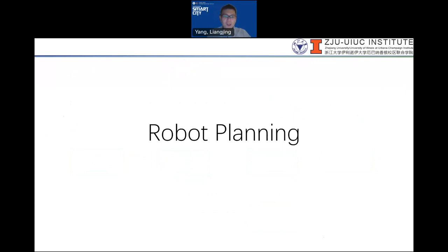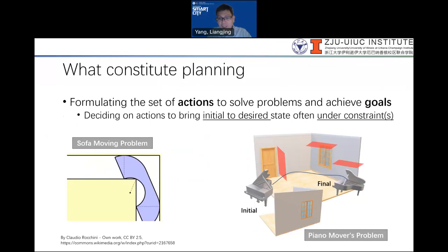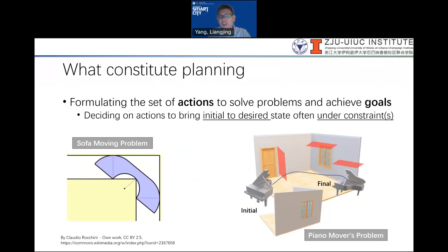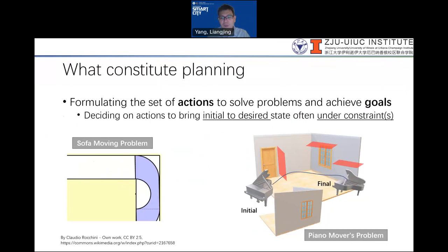Let's go on to robot planning. Planning, formally defined, is formulating a set of actions needed to solve a certain problem and achieve certain goals — deciding on an action to bring a particular initial state to a particular desired state. But often you are faced with constraints, so it's not easy to do it in any random manner.